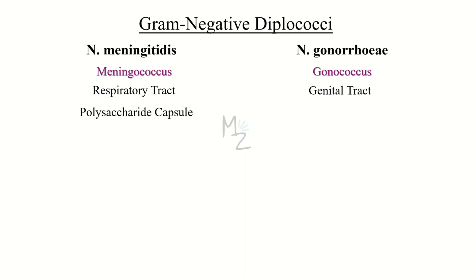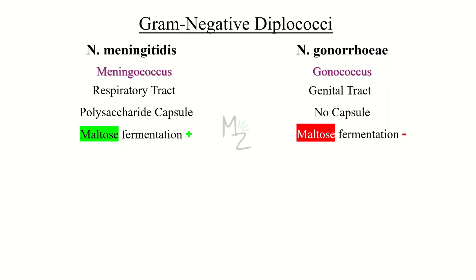Neisseria meningitis has a polysaccharide capsule, but Neisseria gonorrhea has no such capsule. Neisseria meningitis ferments maltose along with glucose, but Neisseria gonorrhea does not ferment maltose.